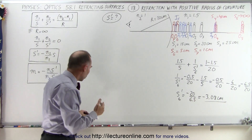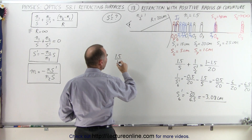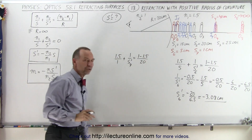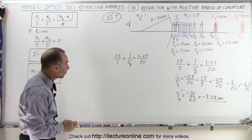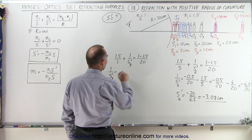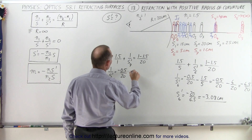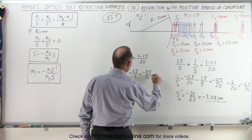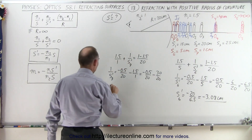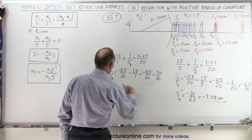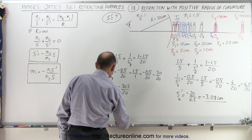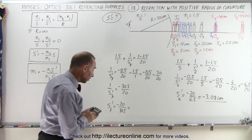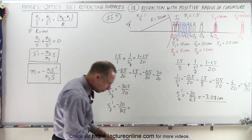Now let's try one more with the object at 1 centimeter. So 1.5 divided by 1, plus 1 over s7 prime, is equal to 1 minus 1.5 over 20, which is the radius of curvature of the boundary. It's positive because it's convex towards the object. So we have 1 over s7 prime is equal to negative 0.5 over 20 minus 1.5 over 1. The common denominator is 20, so this becomes minus 0.5 over 20 minus 30 over 20, giving 1 over s7 prime equal to minus 30.5 over 20, which means s7 prime is equal to minus 20 over 30.5. It's still a negative value, still on the same side as the object, and it's 20 divided by 30.5 — about minus 0.66.